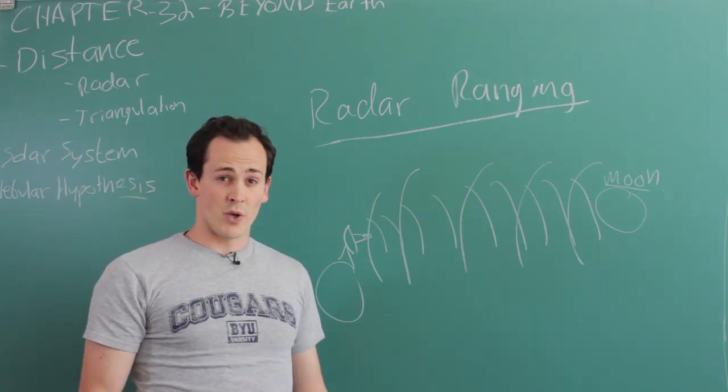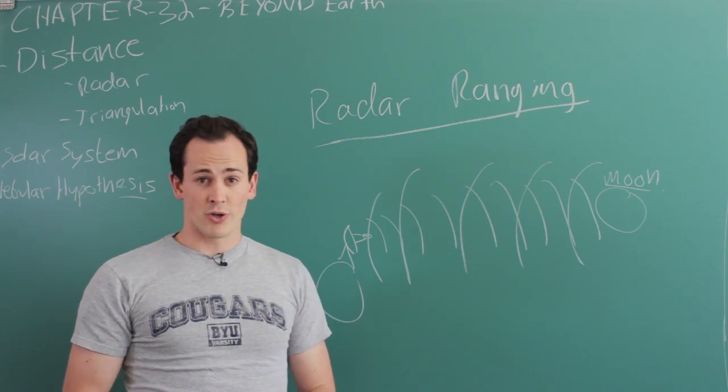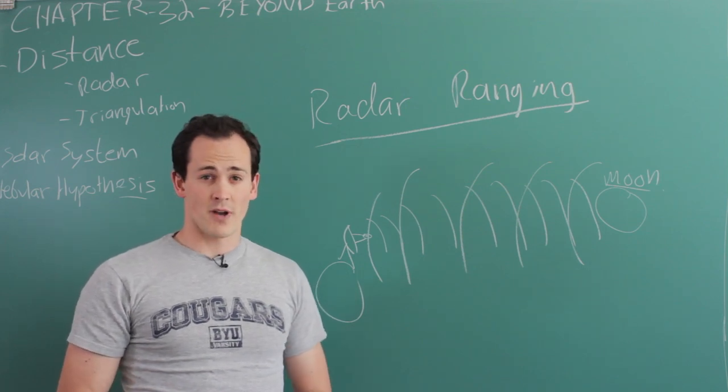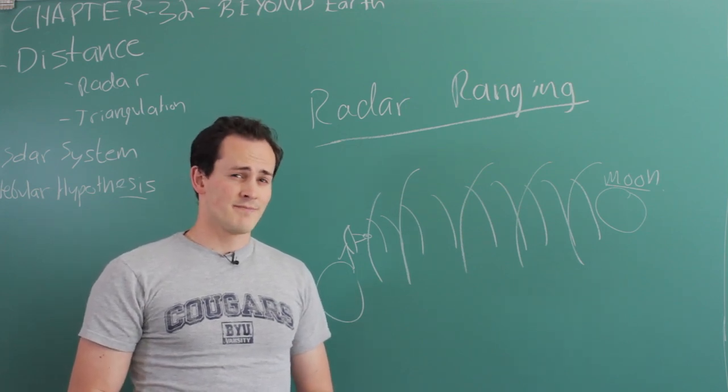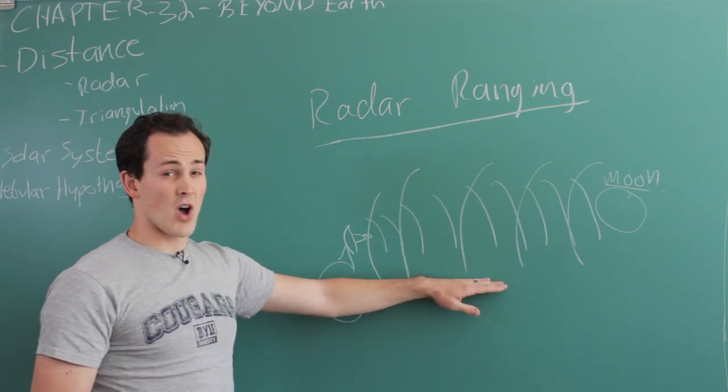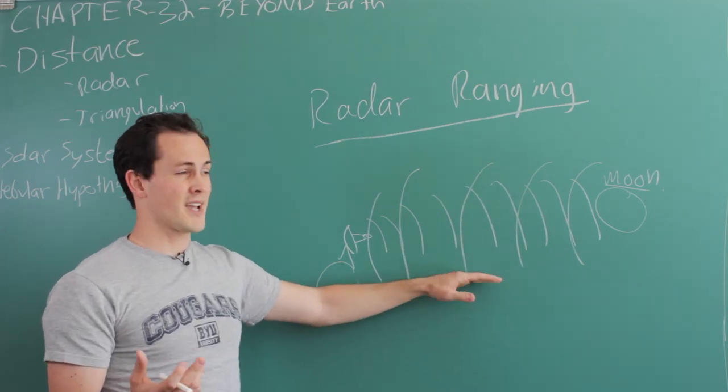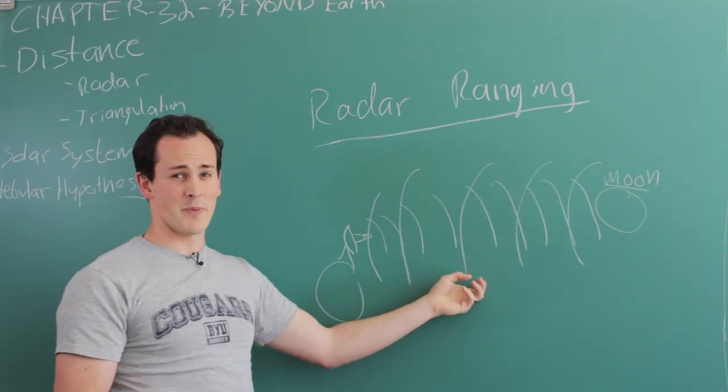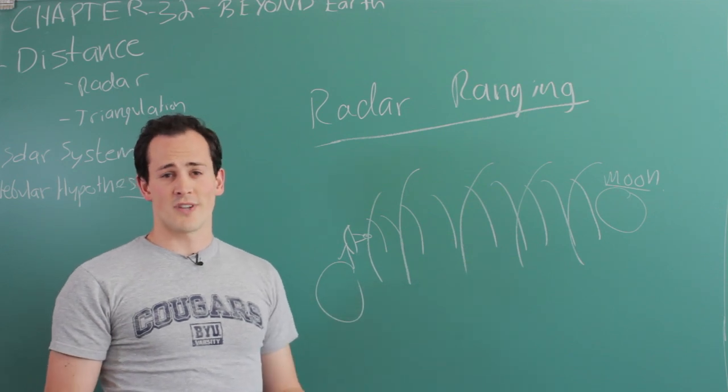That works for objects that are within the solar system: asteroids, Jupiter, the moon, all of those types of objects. It doesn't really work for the sun because the sun is emitting this type of radiation all the time, and so we're never able to pick up these tiny little things that should be bouncing back. The sun just washes it all out.